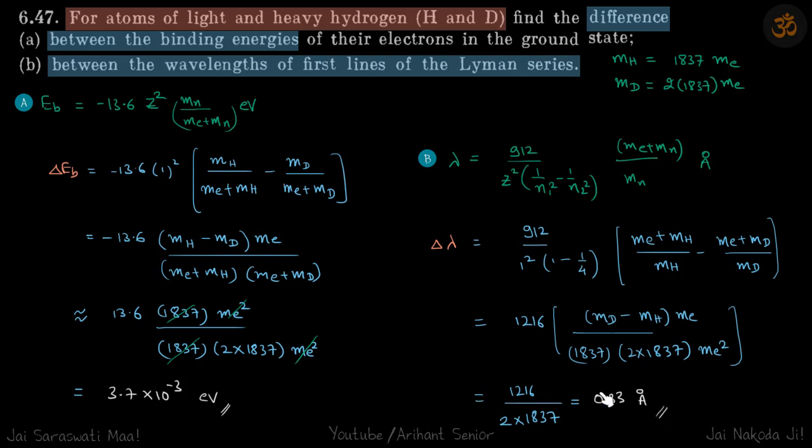So here, more energy was needed to remove the electron from deuterium, and here also in the first line of Lyman series, the one with the deuterium will have more energy and less wavelength. All right.